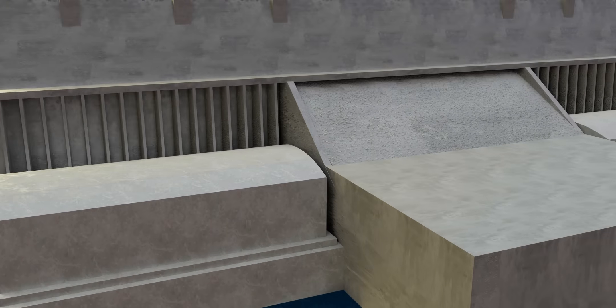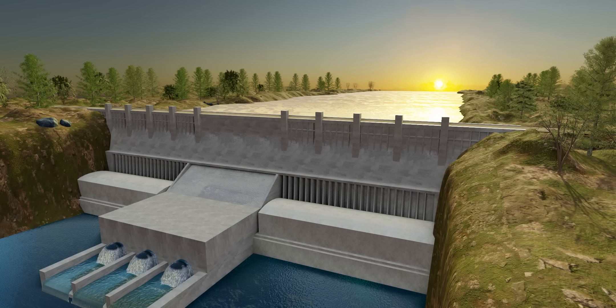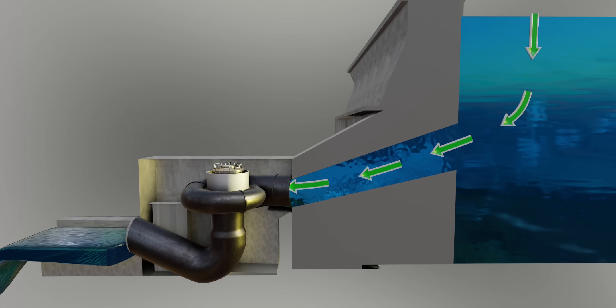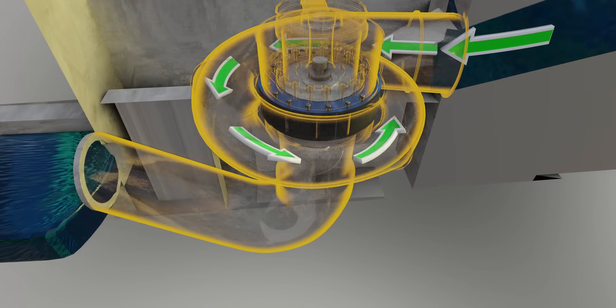Kaplan Turbines are best suited to low head, high flow rate situations. You can see how water from the dam flows through the penstock and finally reaches the runner of the turbine.